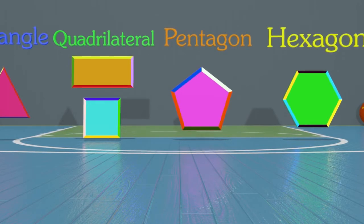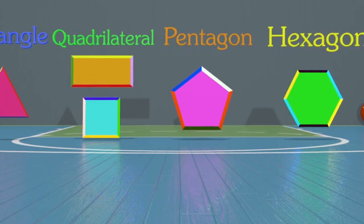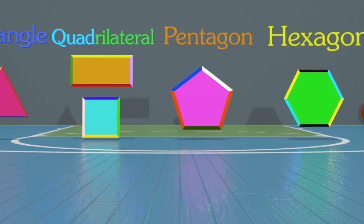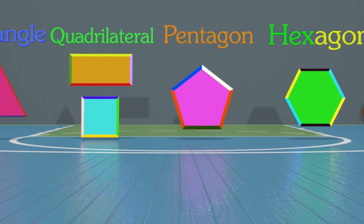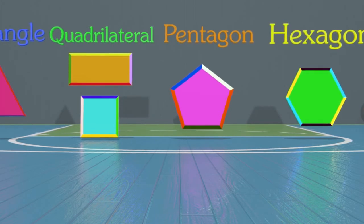Tri means three — that's why a triangle has three sides and three angles. The word quad means four — that's why a quadrilateral has four sides and four angles. Pent means five, which is why a pentagon has five sides and five angles. And hex means six, so a hexagon has six sides and six angles. Phew, that's a lot to remember! Thanks for learning shapes with me today, guys — it's been awesome. We'll see you next time!